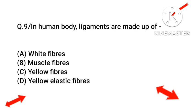Question number nine: in the human body, ligaments are made up of what? The right answer will be yellow fibers, option number C.